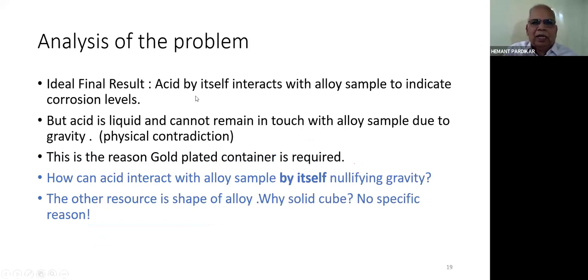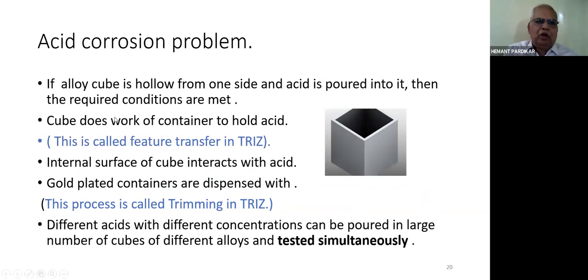The ideal final result: acid by itself interacts with alloy sample to indicate the corrosion levels, but acid is a liquid and cannot remain in touch with alloy sample due to gravity. This is a physical contradiction. For this reason gold plated container is required. How can acid interact with alloy samples by itself, nullifying gravity? The other resource available is shape of the alloy. Why solid cube? There is no specific reason. If alloy cube is hollow from one side and acid is poured into it, then required conditions are met.